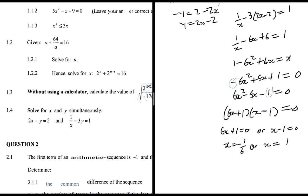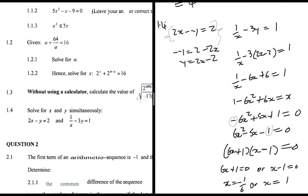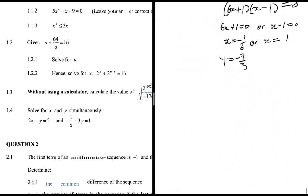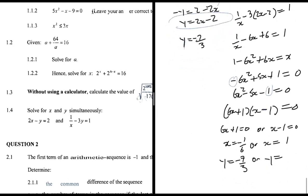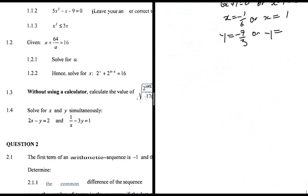For x = -1/6: y = 2(-1/6) - 2 = -1/3 - 2 = -7/3. For x = 1: y = 2(1) - 2 = 0. So the solutions are (x, y) = (-1/6, -7/3) or (1, 0).